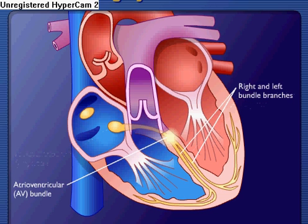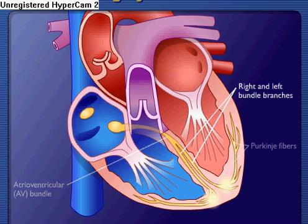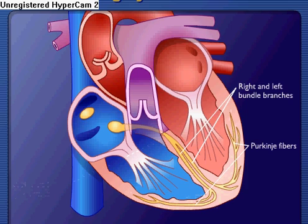Action potentials descend rapidly to the apex of each ventricle along the bundle branches, and are then carried by the Purkinje fibers from the bundle branches to the ventricular walls.